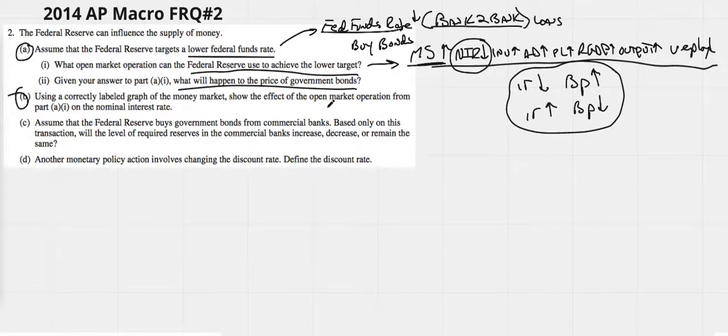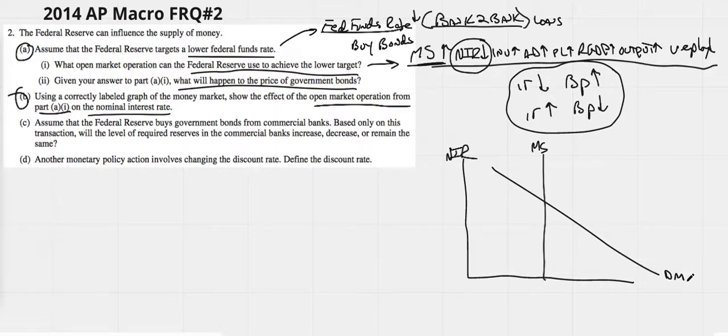Using a correctly labeled graph of the money market show the effect of the open market operation from part A on the nominal interest rate. So we know what's going on. Let's just draw a graph. Nominal interest rates on the vertical and money supply vertical, and then demand for money, quantity of money on the bottom. We know the money supply increases probably due to buying bonds. Money supply increases, shifts to the right. That's going to drive the interest rate down.